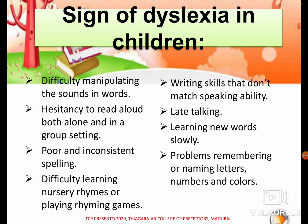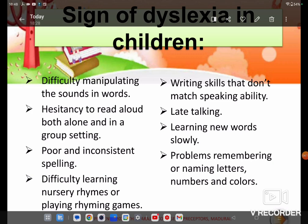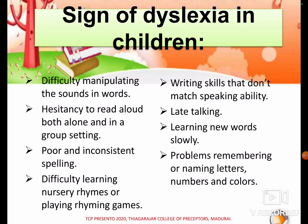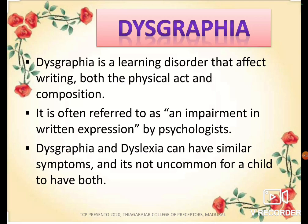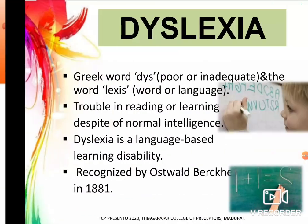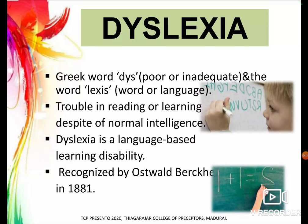Children with dyslexia also show late talking, learning new words slowly, and problems remembering and naming letters and numbers. These are the defects of dyslexia — essentially poor reading skills.